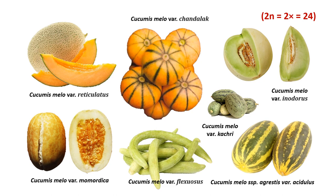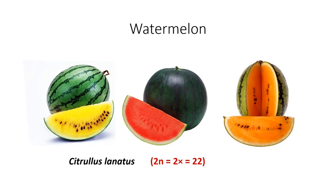Another important botanical variety is Cucumis melo var. inodorus. All of these botanical varieties have the same diploid chromosome number, that is 2n = 2x = 24. Watermelon, Citrullus lanatus, is another important melon with a diploid chromosome number of 22. Remember: for Citrullus lanatus the diploid chromosome number is 22, whereas for Cucumis melo it is 24.